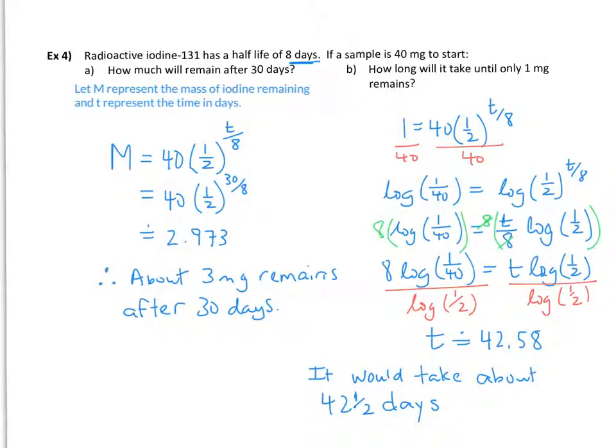So when I went ahead and solved this, I got T to being about 42.58, which means it's about 42 and a half, just a little more than a half, 42 and 13 hours to be able to decay to about one milligram. And there we have it.